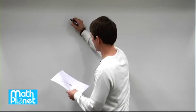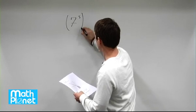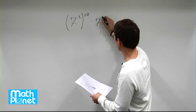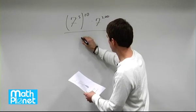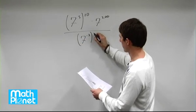Here we want to simplify the following expression. We have 7 to the power of 5 all raised to the power of 10 times 7 to the power of 200, all over 7 to the power of negative 2 all raised to the power of 30.